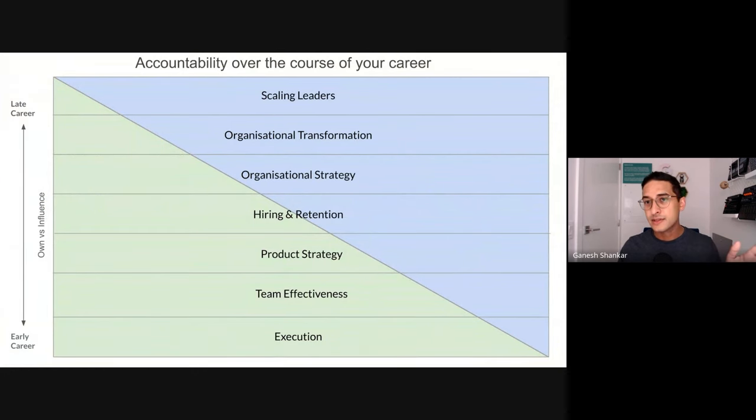This is a framework that I use to describe how a PM's accountability changes over the course of their career. Let me just explain this chart a little bit. You can think of the green as the areas you're expected to deliver, and the blue is the things you need to influence. You can see immediately that all PMs at all stages of their career own and influence a variety of work. But it's this balance that changes between what you own and what you need to influence.